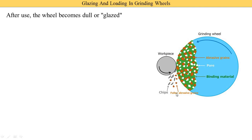Along with the chips, some quantity of the abrasive grains also fall off. The grinding wheel generally has a rough surface. Glazing means it looks like glass — if the wheel becomes smooth and completely circular like glass, that is called glazing. When this rough surface becomes completely smooth and round, it is called glazing.